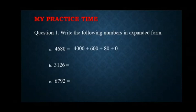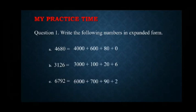Part B: 3126 is written in extended form as 3000 plus 100 plus 20 plus 6. Part C: 6792 will be written as 6000 plus 700 plus 90 plus 2.